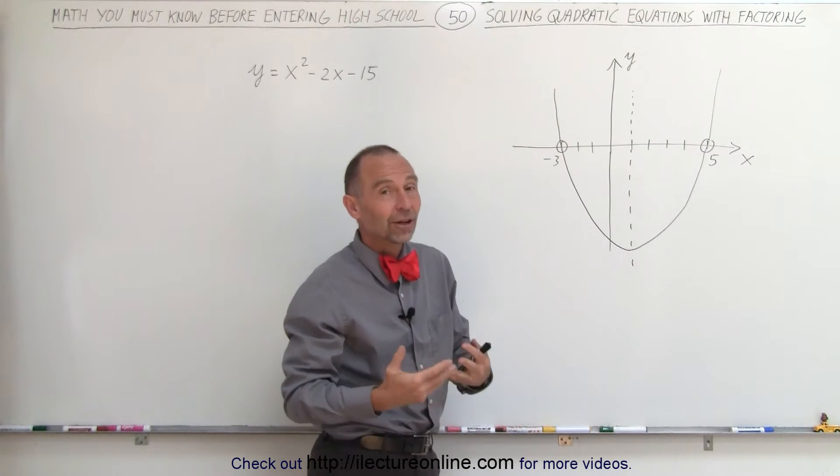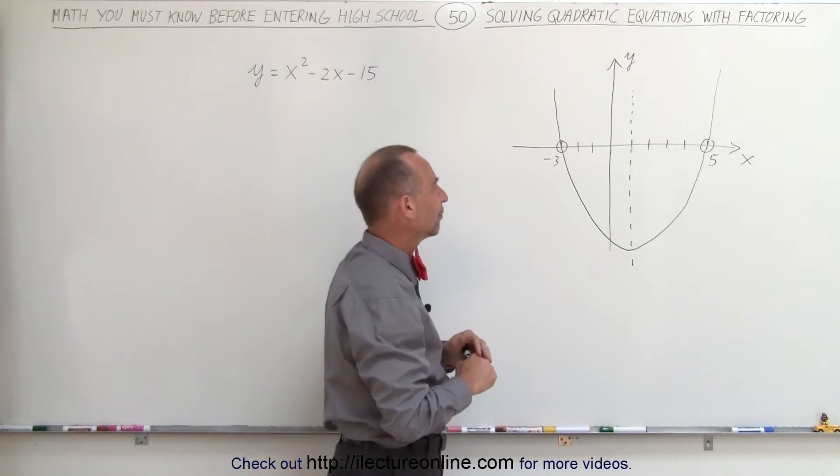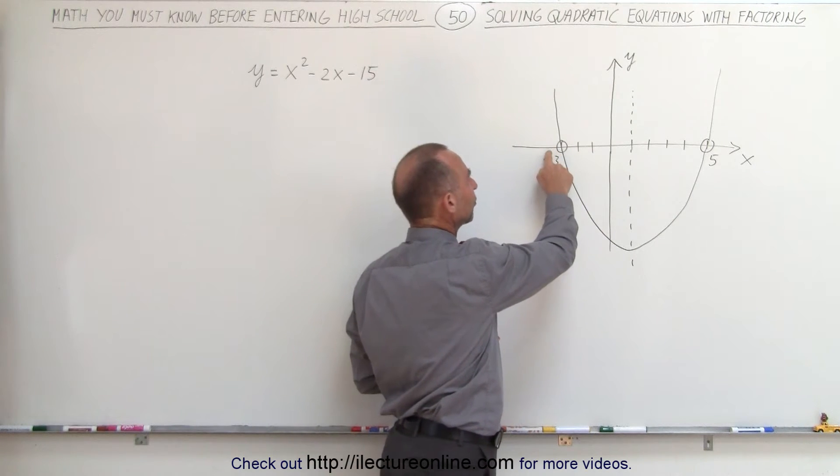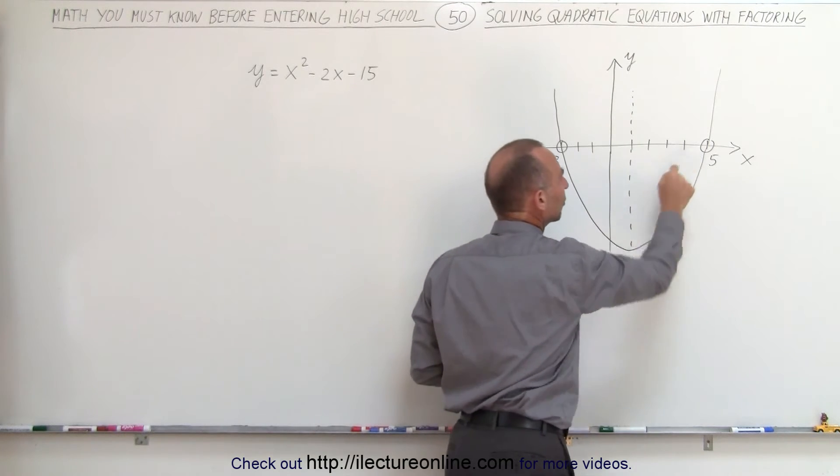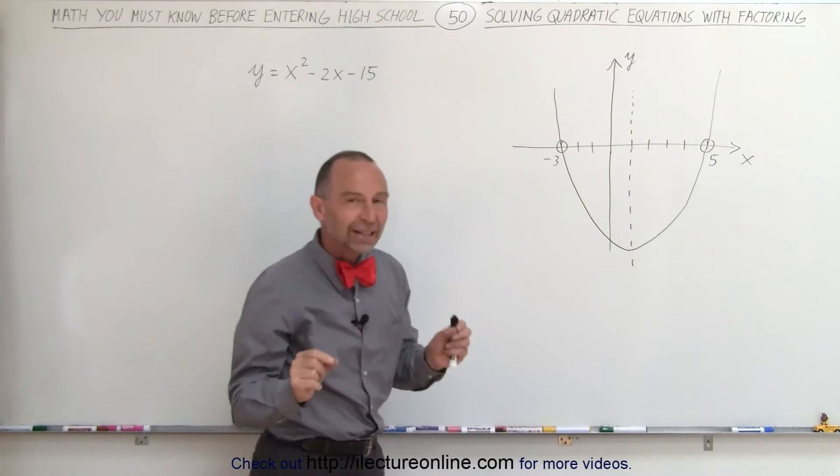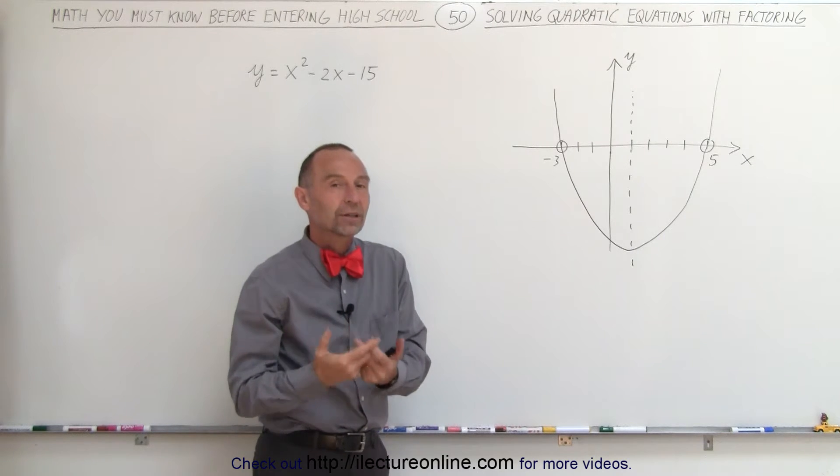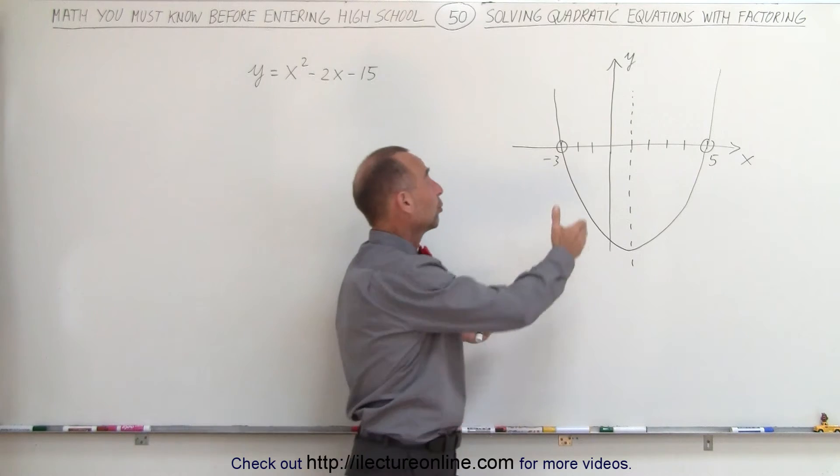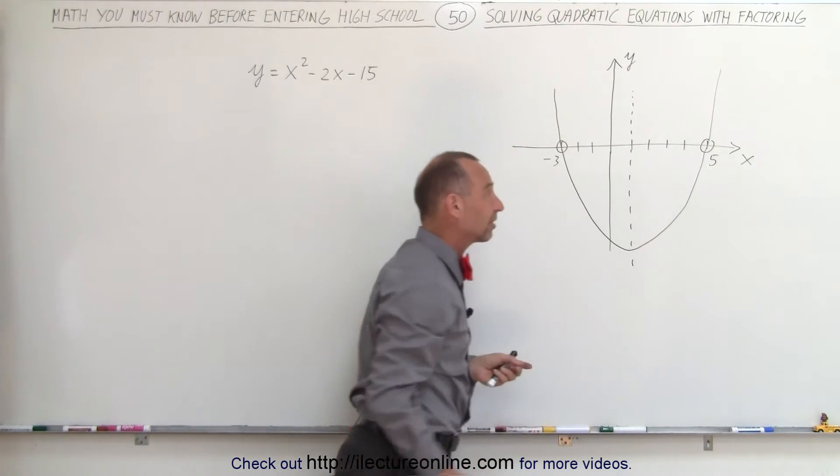But here we can see that it crosses the x-axis at x equals minus 3 and at x equals plus 5. Finding those two points is what we call solving the quadratic equation. When we try to solve an equation, it's finding the points where the graph crosses the x-axis.